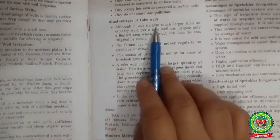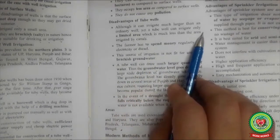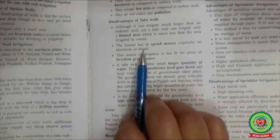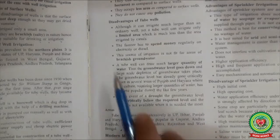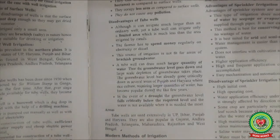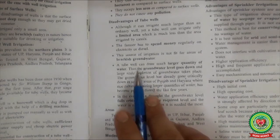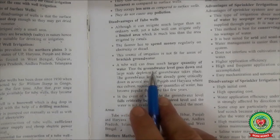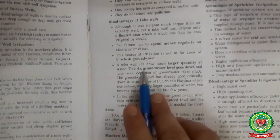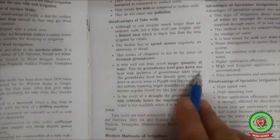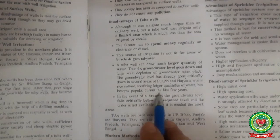Disadvantages of tube wells: although a tube well can irrigate a much larger area than an ordinary well, it still cannot be compared to canal irrigation which covers vast areas. The farmer has to spend money regularly on electricity or diesel. They are not suitable for areas with brackish groundwater where water is not fit for drinking. A tube well can draw much larger quantities of water, which causes the groundwater level to go down — large-scale depletion of groundwater has taken place in several areas of Punjab and Haryana where rice cultivation requiring large quantities of water has become popular.